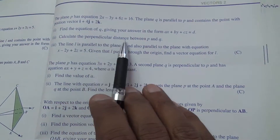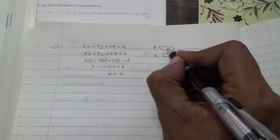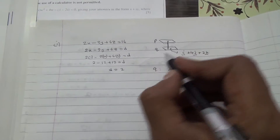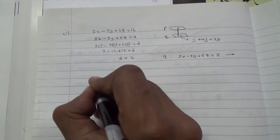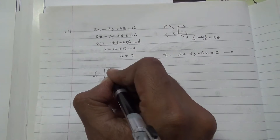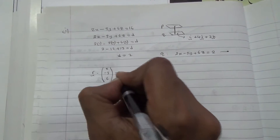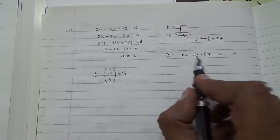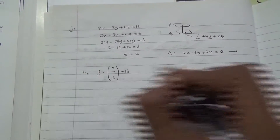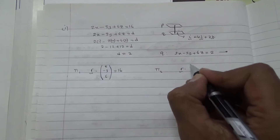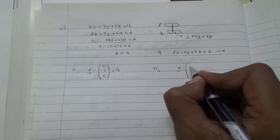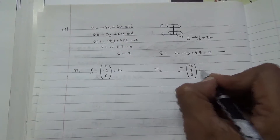For the second part, calculate the perpendicular distance between P and Q. We need to find the perpendicular distance between them. Plane P has equation 2x minus 3y plus 6z equals 16, which we can write as r dot (2, -3, 6) equals 16. The second plane has equation r dot (2, -3, 6) equals 2.